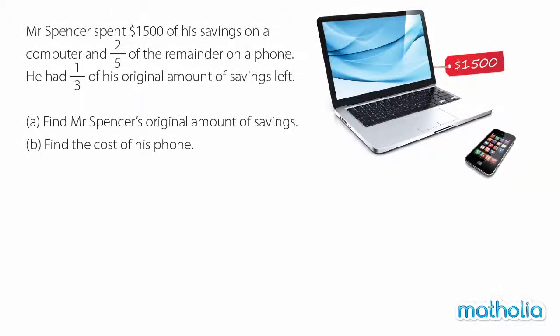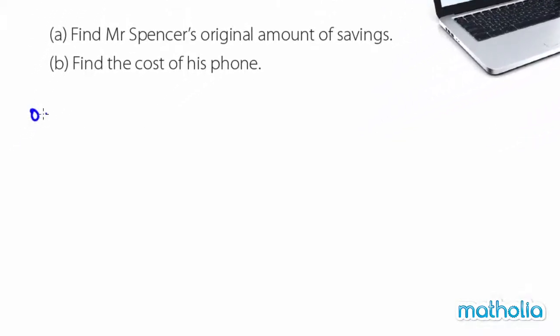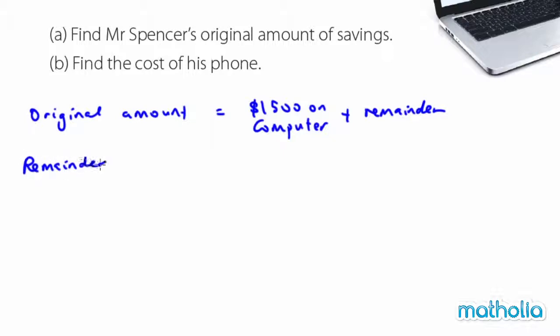I tried to draw a diagram to solve this problem. So I tried to understand the original amount. We are looking at it's $1,500 on a computer and remainder. So my remainder, it's two-fifths on phone plus three-fifths left.